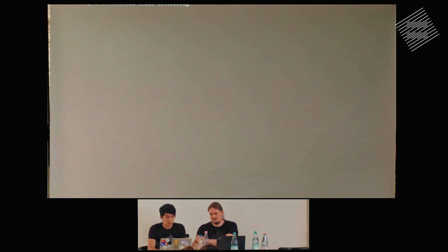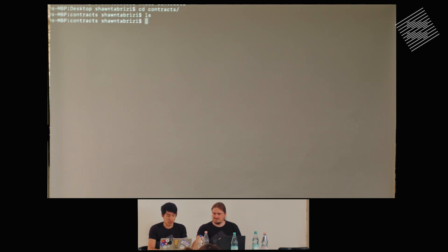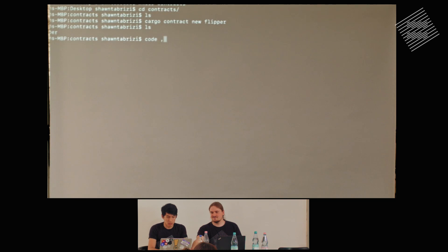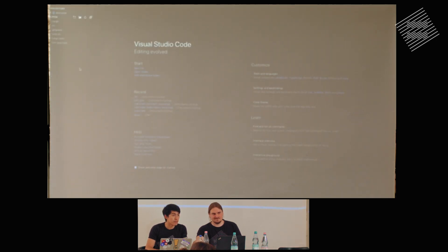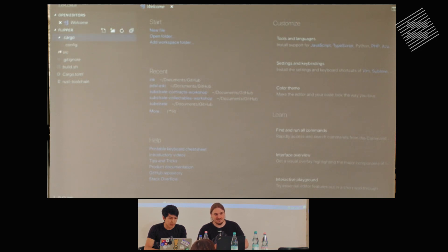I'm on my desktop. I'm going to create a new folder called contracts and change into it. I've already installed the ink CLI, and I can create a new project with it. I'll type cargo contract new, and for this first contract we're going to call it flipper — the most simple contract. It creates a folder called flipper which we can move into and open with VS Code. The CLI tool is called cargo contract. It's a cargo plugin, and it basically just supports this one command so far.